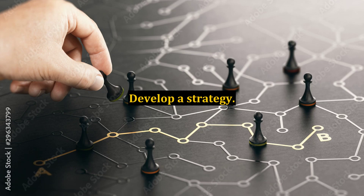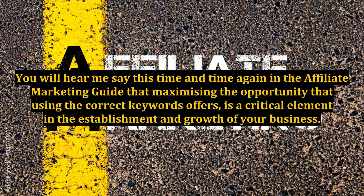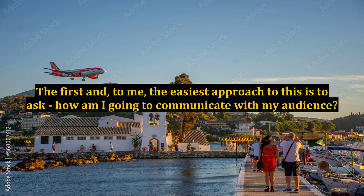Develop a strategy. Once you have your list, you now need to have a clear strategy and plan as to how you are going to approach this part of your business. You will hear me say this time and time again in the Affiliate Marketing Guide that maximizing the opportunity that using the correct keywords offers is a critical element in the establishment and growth of your business. So, what should be included in your strategy? The first and, to me, the easiest approach is to ask: how am I going to communicate with my audience?